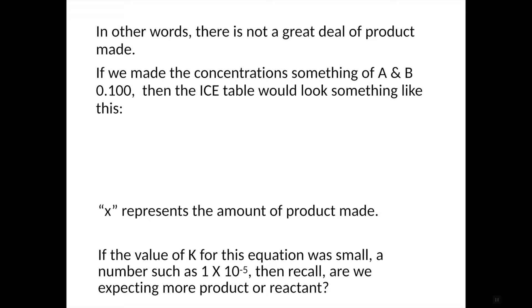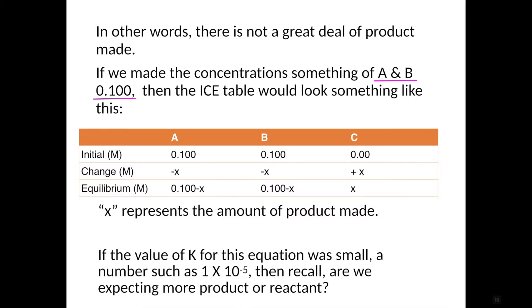If we made the concentrations of A and B something like 0.1, you would end up with an ICE table that would look like this, for what we just did. So pretty similar to what I showed you in the beginning, except there's just one C. X represents the amount of product made.